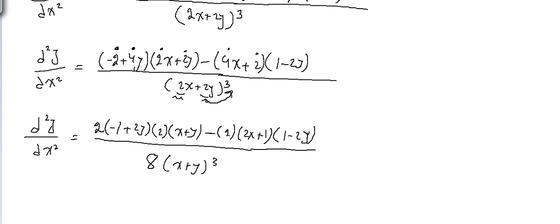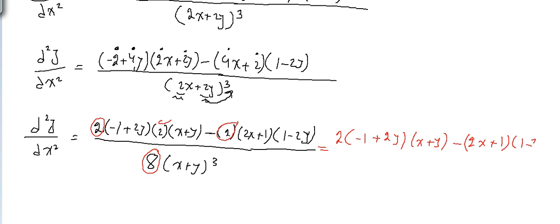One more step: I can take this 2 as a common factor with another 2 and simplify directly by 8. The final result will be: (minus 1 + 2y) times 2 times (x + y), minus (2x + 2 + 1) times (1 - 2y), over 4 times (x + y) to the power 3. I took the two 2s together and simplified with 8 to get 4.